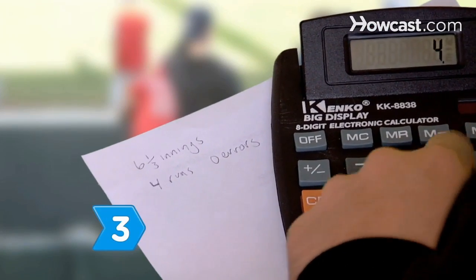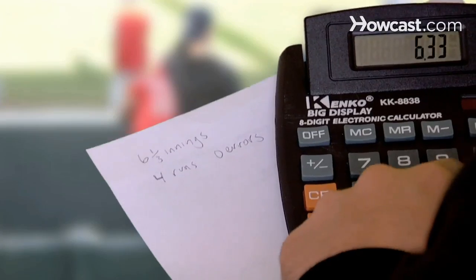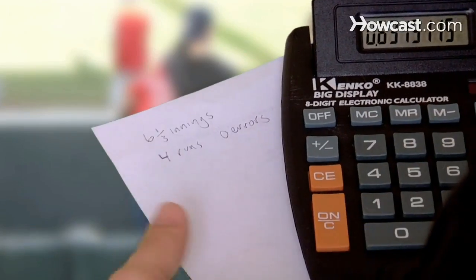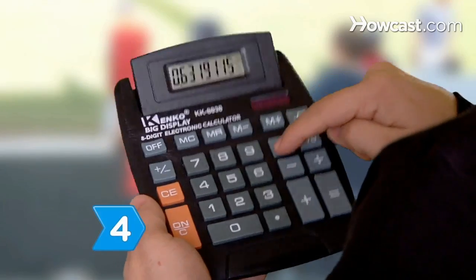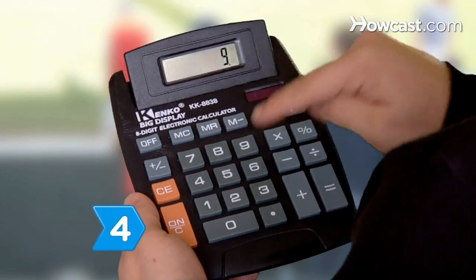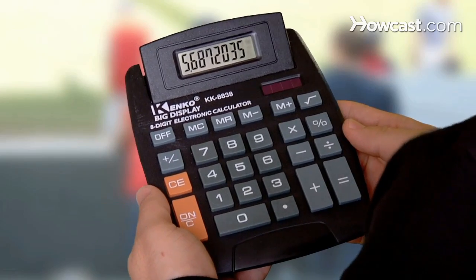Step 3. Divide the total number of earned runs by the total number of innings pitched. Step 4. Multiply by 9 and round this number to two decimal places to find the pitcher's ERA.